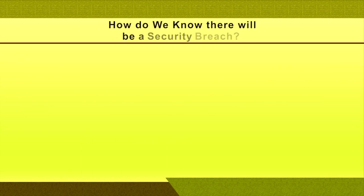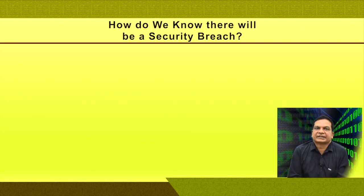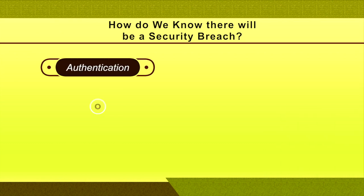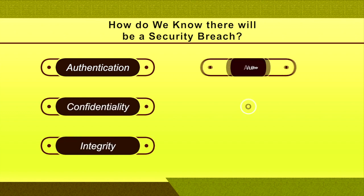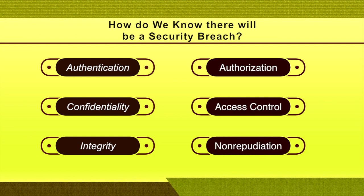How do we know there will be a security breach? It is a big question even for system administrators. Violation in any of the following security parameters leads to a security breach: authentication, confidentiality, integrity, authorization, access control, and non-repudiation. Violation of any of these parameters leads to a security breach.